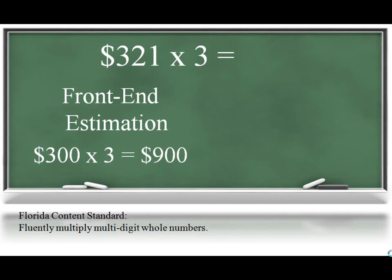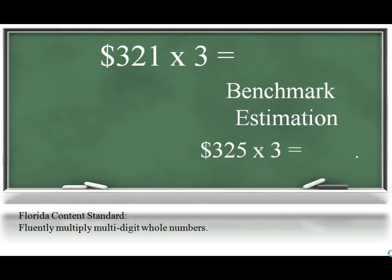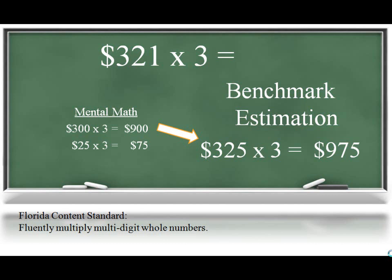Front-end estimation is less precise than rounding to a benchmark, such as 325 times 3, which is more precise but may take a bit longer. Students can discuss that while both strategies lead to a reasonable estimate, each has its own benefits. So either estimate will work as a benchmark to compare their solution to.